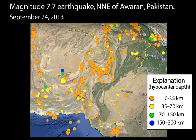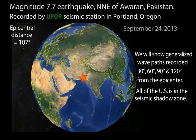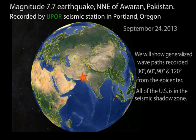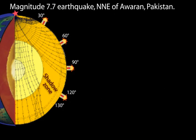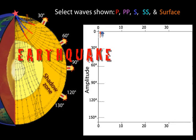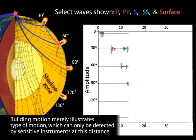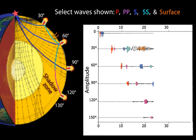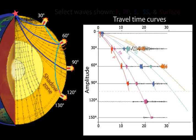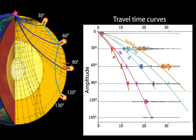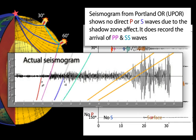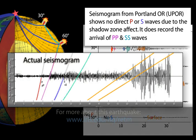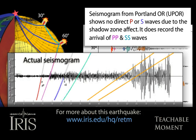We will zoom into the center of the earth to show how seismic waves travel from the epicenter to stations 30, 60, 90, and 100 degrees away. For this earthquake, most of the United States is in the P and S wave shadow zone, so seismograph stations will receive only the PP, SS, and surface waves.